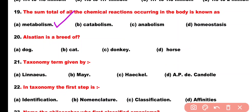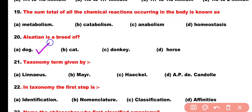Question number 20. Alsatian is a breed of: Option A: Dog, Option B: Cat, Option C: Donkey, Option D: Horse. Correct answer is Option A. Alsatian is a breed of dog.